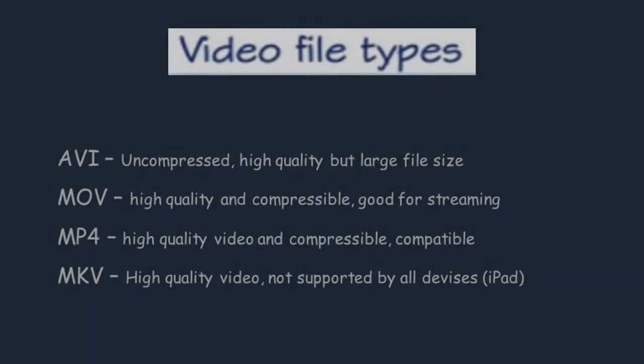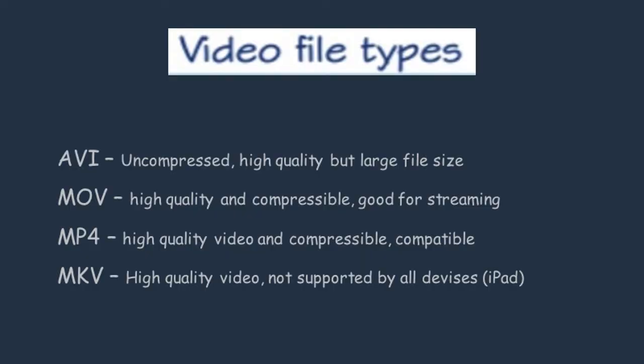These types of files might be used for videos and movies. The first one is AVI, which is uncompressed and allows for high quality videos, but an issue is that the file sizes are large because they can't be compressed.